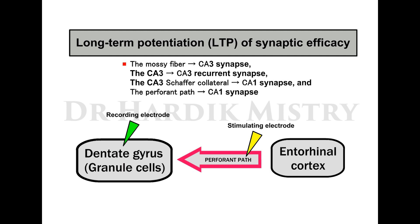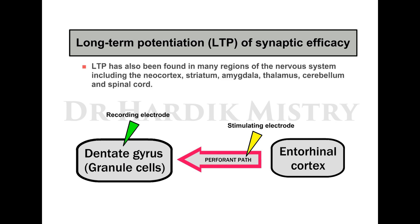LTP is found at the mossy fiber CA3 synapse, the CA3-CA3 recurrent synapse, the CA3 Schaffer collateral CA1 synapse, and the perforant path CA1 synapse. LTP has also been found in many regions of the nervous system, including the neocortex, striatum, amygdala, thalamus, cerebellum, and spinal cord.